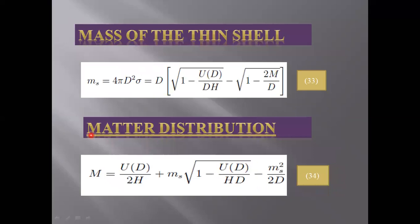Mass matter distribution: Mₛ is the mass of the thin shell which is given in equation 33 and this is the matter distribution. This is the mass of the whole gravitating system, the mass of the whole gravastar in equation 34.